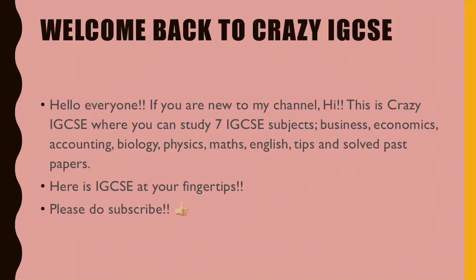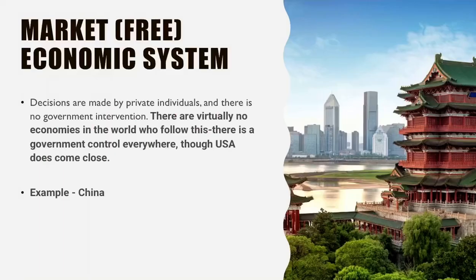Please do subscribe. The first economic system is the market economic system, also known as the free economic system. Here, decisions are made by private individuals and there is no government intervention. There are virtually no economies in the world that fully follow this system, though the USA comes close. An example often cited is China.